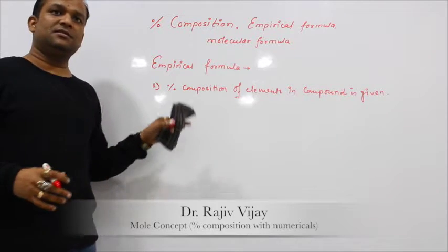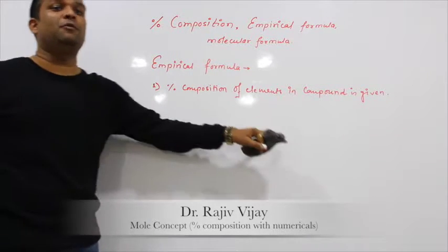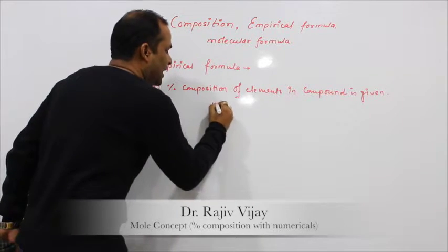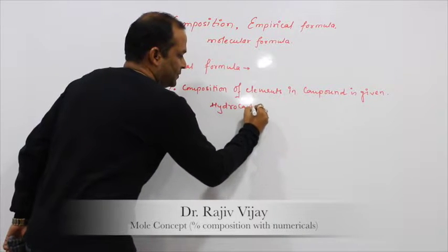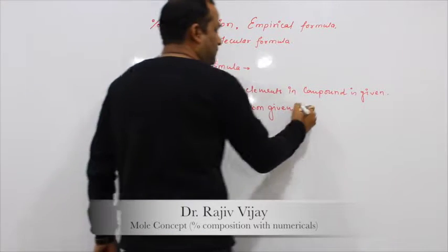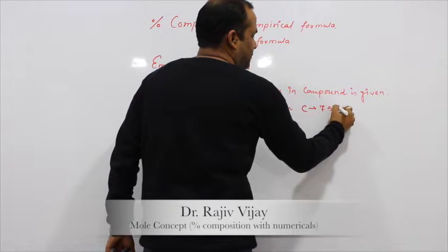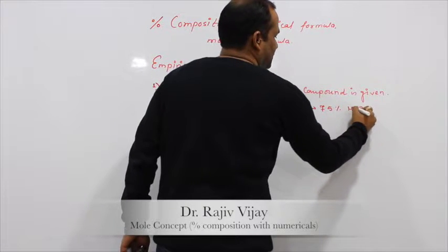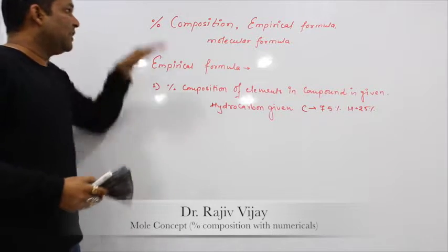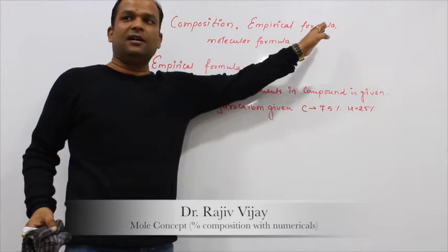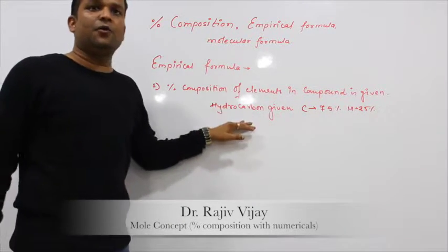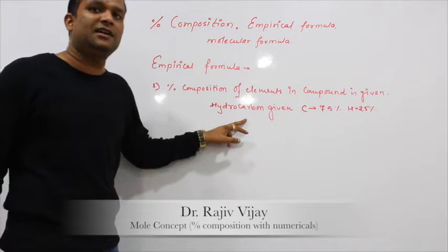We have to find out the formula of a hydrocarbon. A hydrocarbon is given in which the percentage of carbon is 75% and the percentage of hydrogen is 25%. Find out its empirical formula. So we have to find out the empirical formula — the percent composition given is carbon and hydrogen.